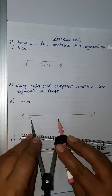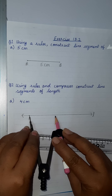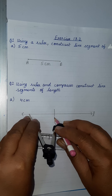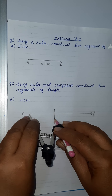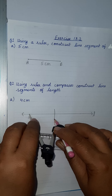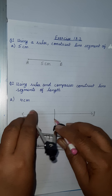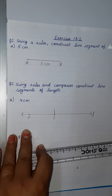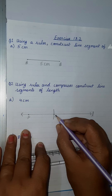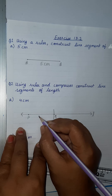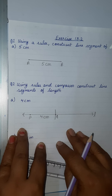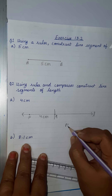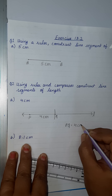Place the steel tip of the compass at point P and cut an arc of 4 centimeters on this line. Name this point as Q. This line segment PQ is of length 4 centimeters. This is how to draw a line segment using compasses.